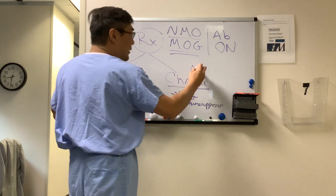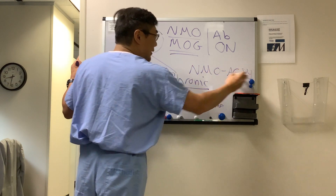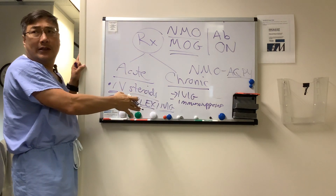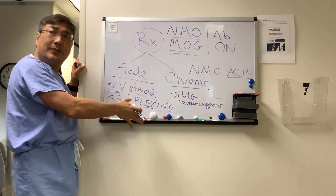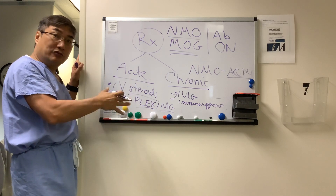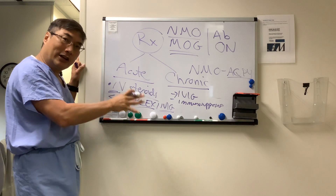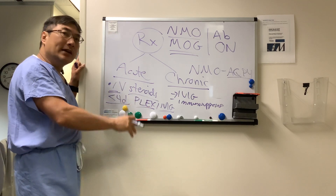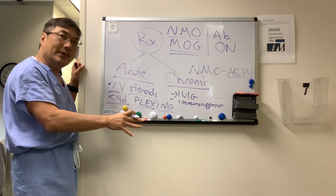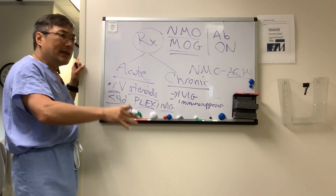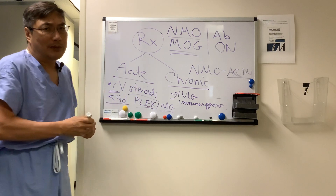In NMO, which involves a different antibody — the aquaporin-4 channel antibody — you have to go to an immunosuppressive strategy. There are currently three approved drugs. Rituximab is not one of them, as it is not approved for NMO. The three approved drugs have different targets: inebilizumab is a CD19 blocker, satralizumab is an interleukin-6 blocker, and eculizumab targets complement C5.